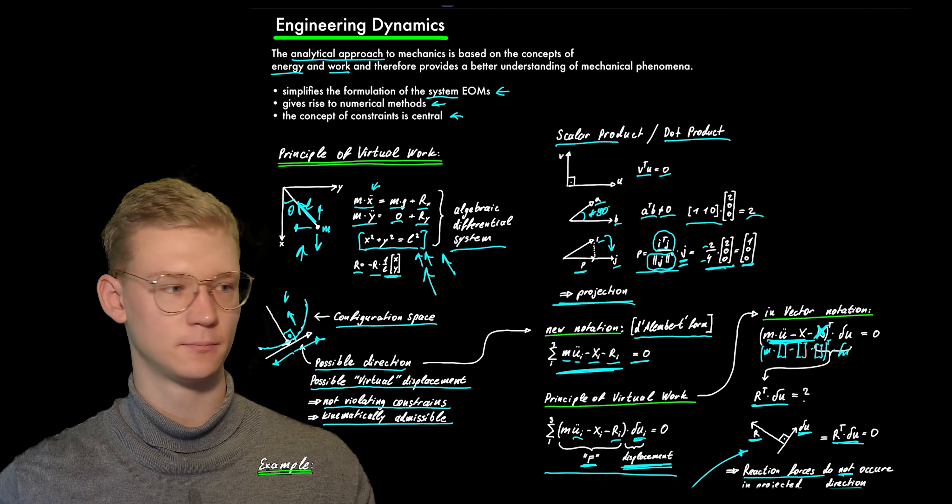So let's introduce a new notation. This is also called the D'Alembert form. We have the mass times the acceleration in direction i, minus the force acting on the particle in direction i, and the unknown reaction force — and they have to be equal to zero. So this is a dynamic equilibrium.